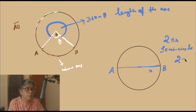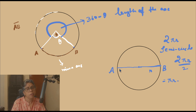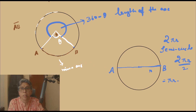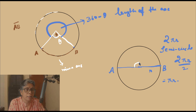The length of the semicircle would be 2πr divided by 2, which is equal to πr. And we all know that the diameter is a straight line — that is, the angle at the centre for the diameter is 180 degrees.